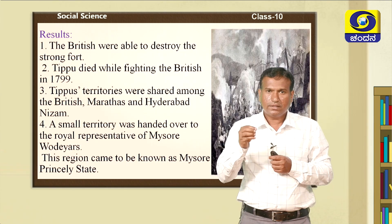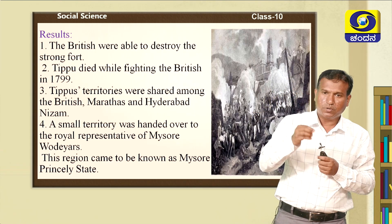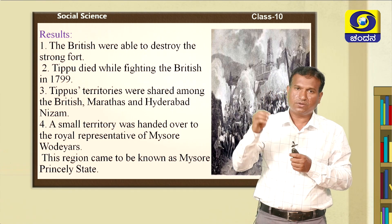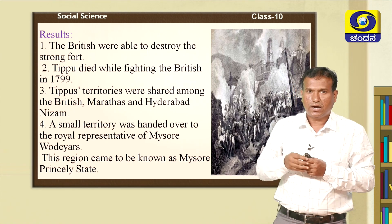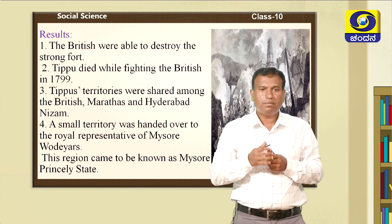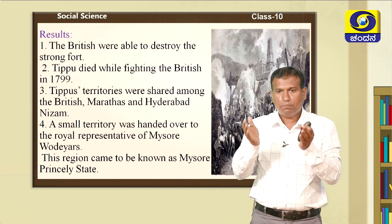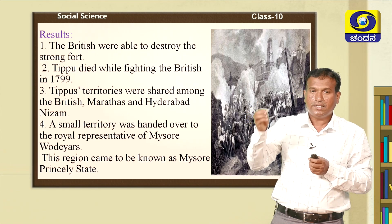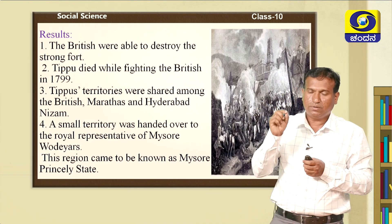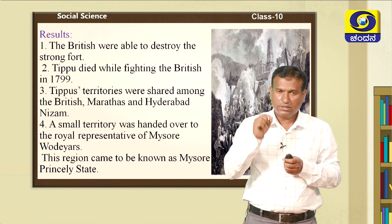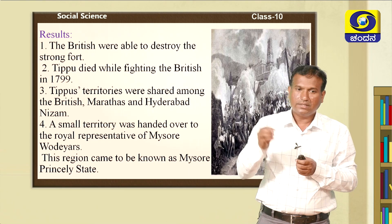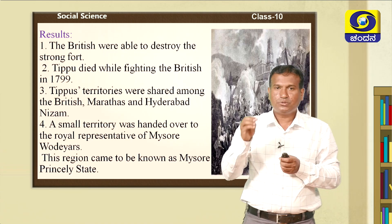What were the results of the Fourth Anglo-Mysore War? First, Tipu Sultan died in the battlefield in 1799. Second, the British were able to destroy the strong fort of Tipu Sultan. Third, after the death of Tipu Sultan, his territory was shared among the English, Marathas, and Nizam of Hyderabad. The remaining small portion of territory was given to the hereditary Wadiyas of Mysore — Krishna Rajawadiyar III became the Wadiya ruler — and he was forced to sign the Subsidiary Alliance. This region then became known as the Mysore Princely State.